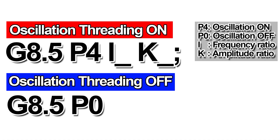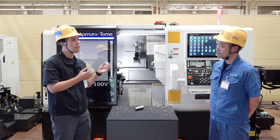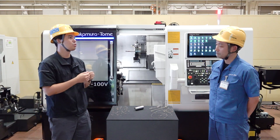The program is very simple. Before starting the oscillation threading process, insert G8.5 P4 I K. When done, insert G8.5 P0 to turn off the mode. The I value sets the frequency ratio and the K value sets the amplitude ratio. By adjusting these I and K values, you can break the chips. It's very clear to see and easy to use.